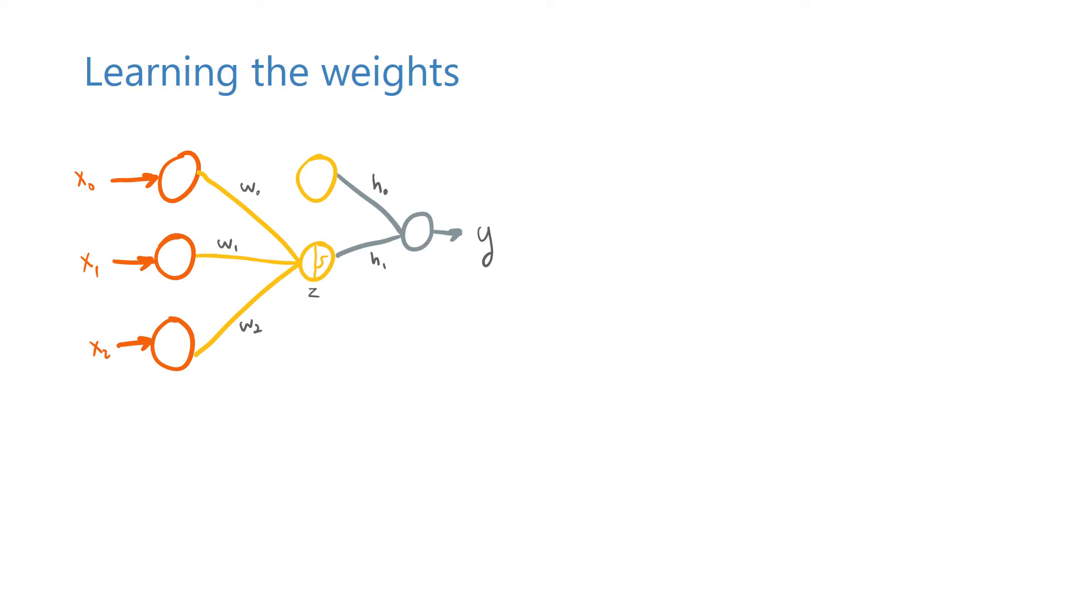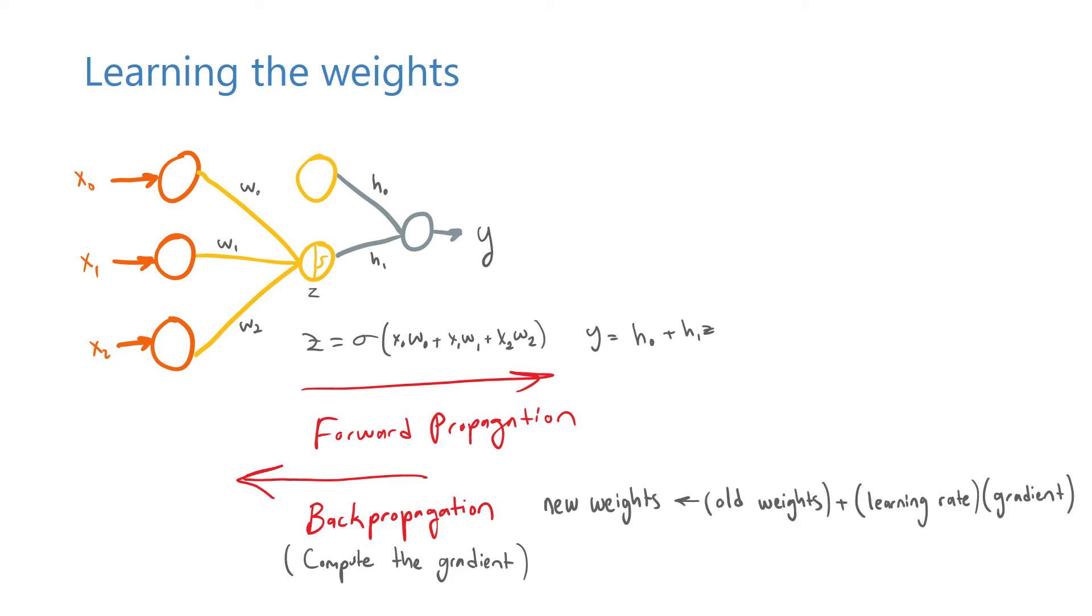We do this for all the weights in the network. We first randomly initialize them, then compute the outputs given the data samples, which is called forward propagation, then compute the error and the partial derivatives with respect to all these weights. The partial derivatives are collectively called the gradient. Each one of these partial derivatives measures how the loss function would change if we were to change a single variable. Once we have the derivatives, we update the weights just like we did in the previous video.